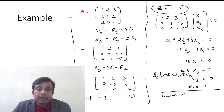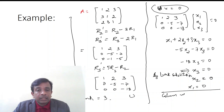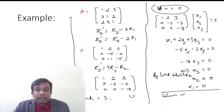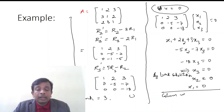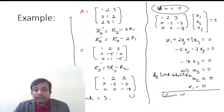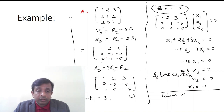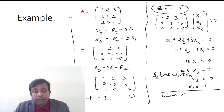Moving to another example: A = [1 2 3 / 3 1 2 / 2 3 1] row-wise. We perform R2' = R2 - 3*R1 and R3' = R3 - 2*R1. Viewers should verify these operations yield the matrix 1 2 3 / 0 -5 -7 / 0 -1 -5. Then R3' = 5*R3 - R2 results in 1 2 3 / 0 -5 -7 / 0 0 -18.